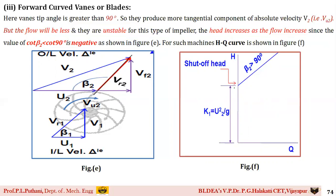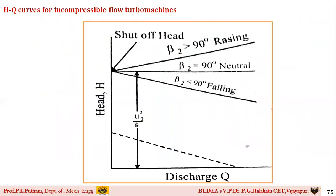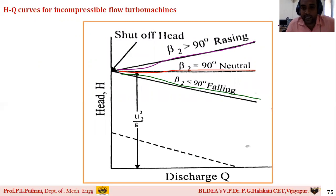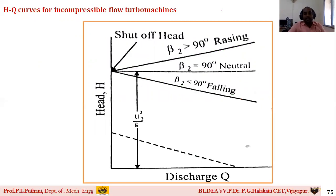Combining all three conditions on a single graph: for β₂ < 90°, head decreases as discharge increases; for β₂ = 90°, head remains constant (the neutral case); for β₂ > 90°, head increases with increasing discharge. These are the three performance curves for the three blade angle cases. In the next session, we will discuss key hints on how to draw velocity triangles under different conditions.